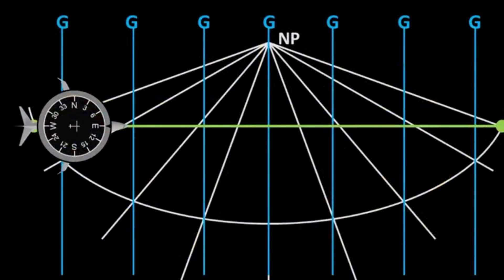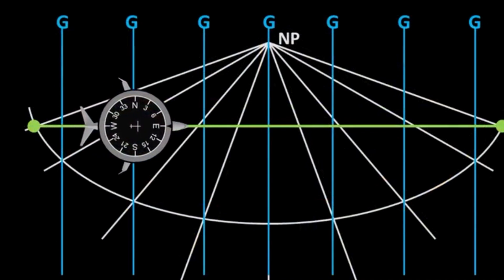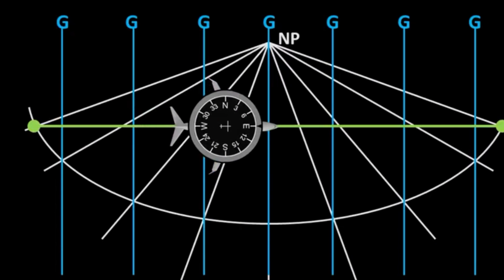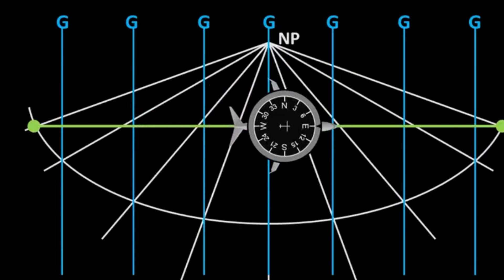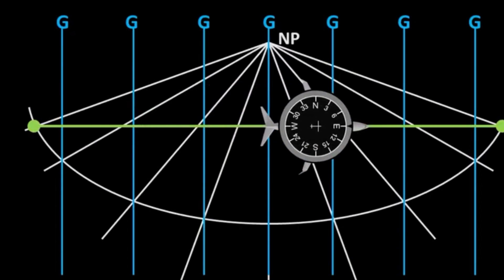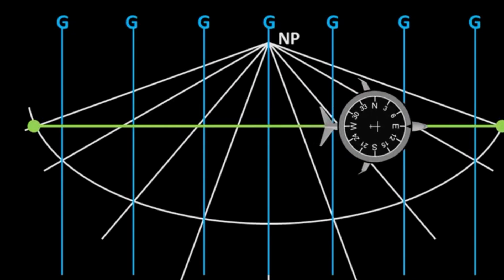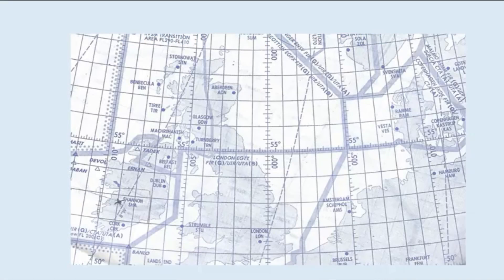Another way to solve this issue is by imposing a grid and flying by reference to grid north, where the aircraft can maintain a constant grid track. As seen in the animation, the aircraft flies a constant grid track while flying a great circle track from A to B, which is the shortest distance between two points on a sphere.